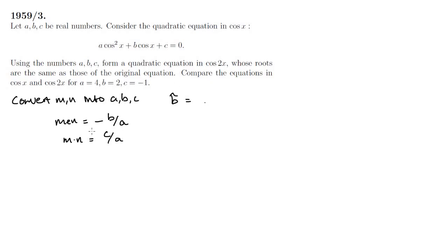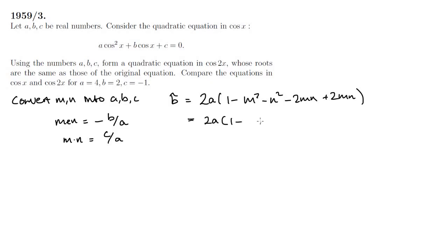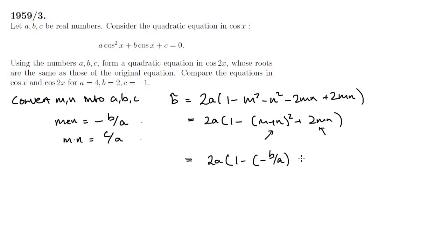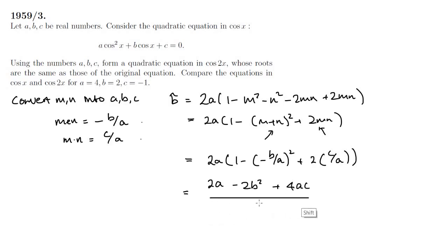Recalling that B̃ equals 2A(1 minus m squared minus n squared), we add and subtract 2mn, because this allows us to rewrite m squared plus n squared plus 2mn as (m plus n) squared. The sum of roots gives us (m plus n) squared, and 2mn is the product of roots. Substituting a, b and c for m and n and expanding, we should get B̃ equals (2a squared minus 2b squared plus 4ac) over a.